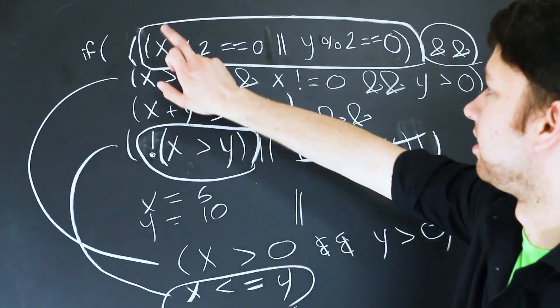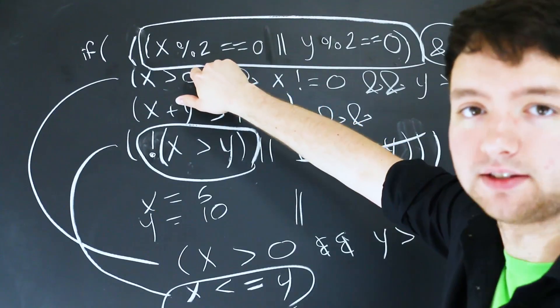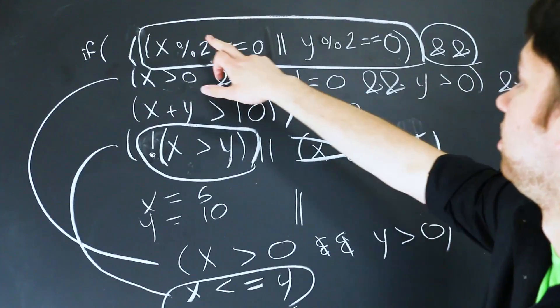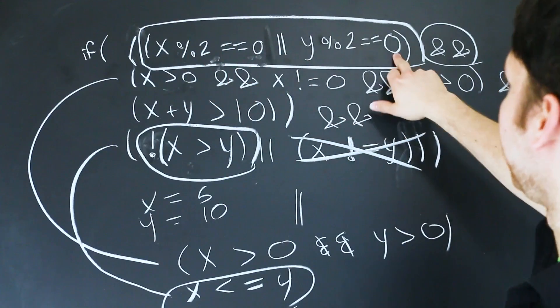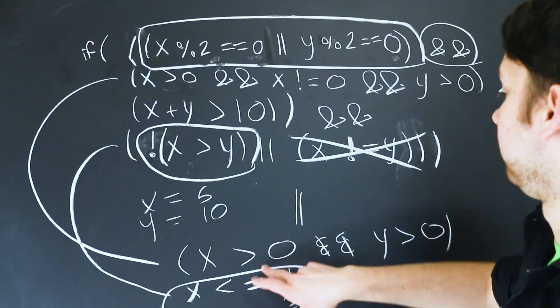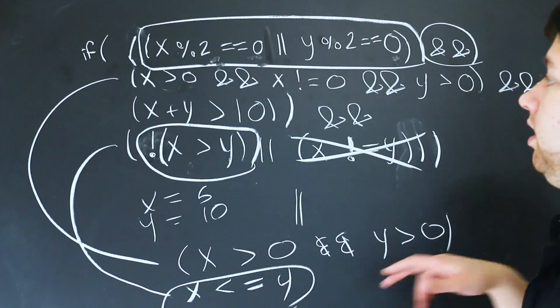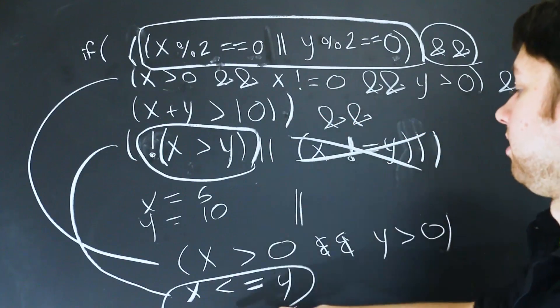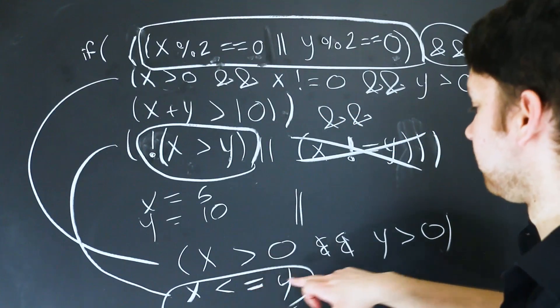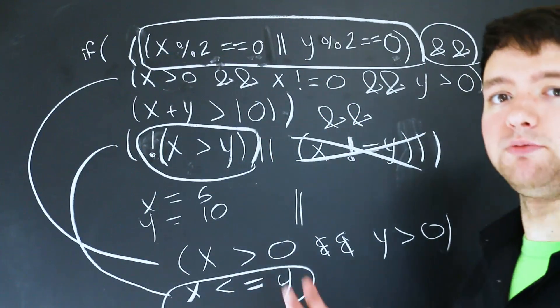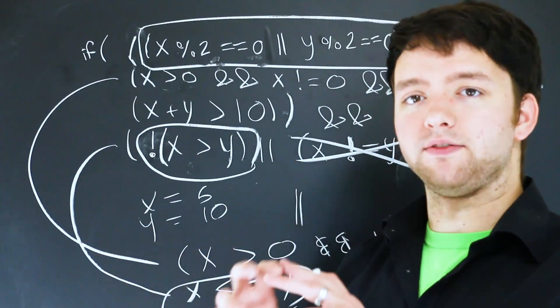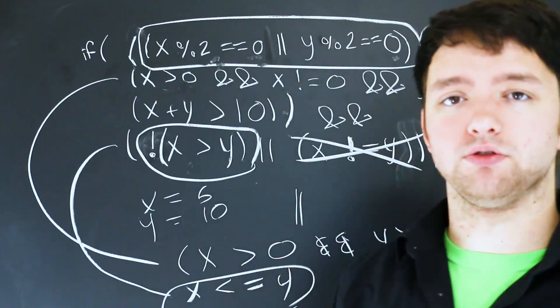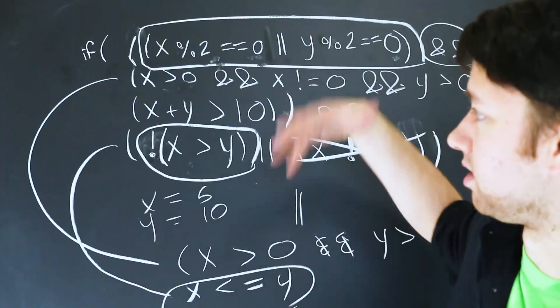So essentially what this is asking: x modulus two is asking if it's even, because anything that's even when divided by two, the remainder is going to be zero. So x has to be even, y has to be even, and they both have to be greater than zero. And when you add them together, it has to be greater than 10. And x has to be less than or equal to y. So that would be the smaller, simpler expression, which would only have a set of numbers that would pass as true. That's kind of how you go through the process of simplifying and processing this kind of thing.